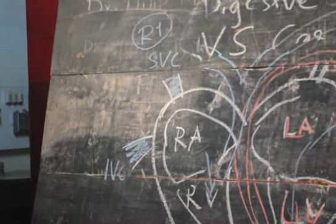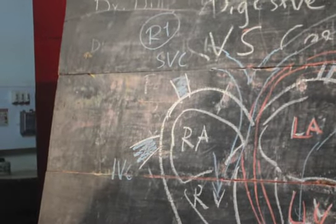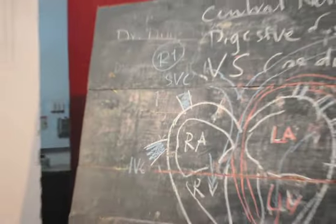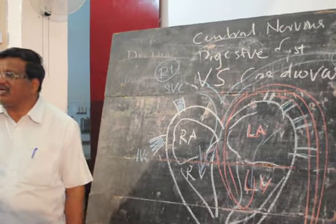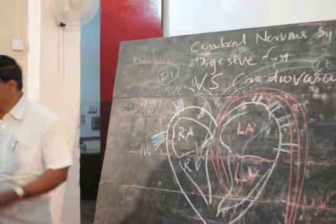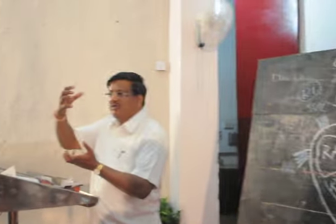The upper two chambers contract at one time and the lower two chambers contract at the other time. The upper ones are the atria and the lower ones are the ventricles. When the right atrium and the left atrium pump, the left ventricle and the right ventricle receive the pumped blood from the above atrials. When the upper chambers contract, the lower chambers dilate or relax and receive the blood pumped from above.